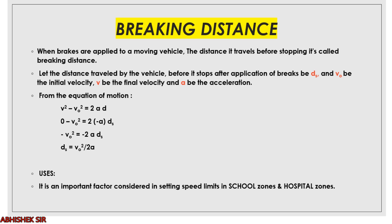Substituting final velocity as 0: 0 − v₀² = 2 × (−a) × ds. Here I have used minus a because the velocity is slowly reducing and the vehicle is stopping — that means it is retardation, not acceleration. So instead of a I have kept minus a, and displacement d is replaced by ds, the braking distance.